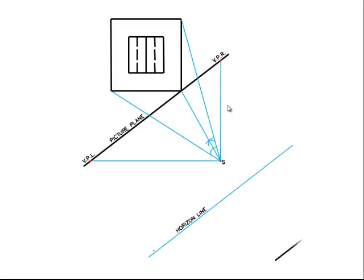Then locate your vanishing points and your ground line. Now, note that one edge of our object is located on the picture plane. That means that this edge is a true length.